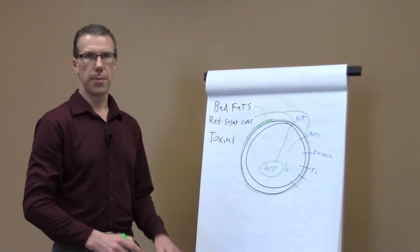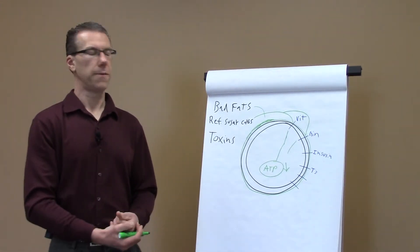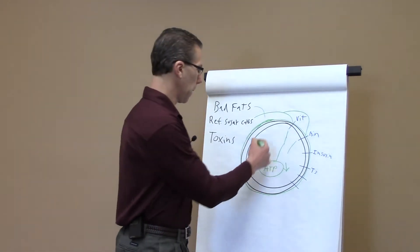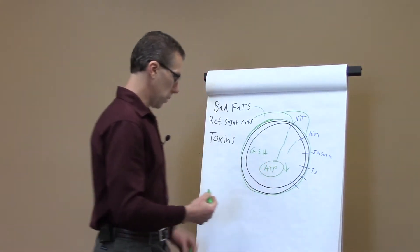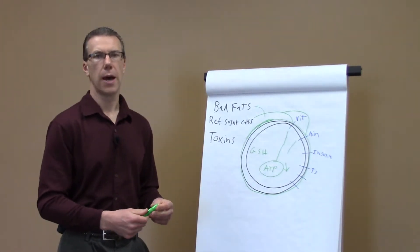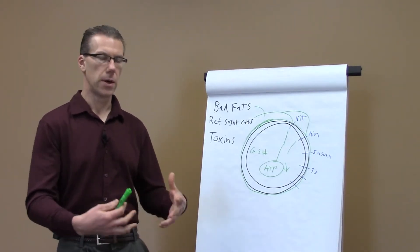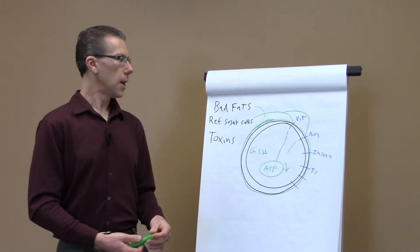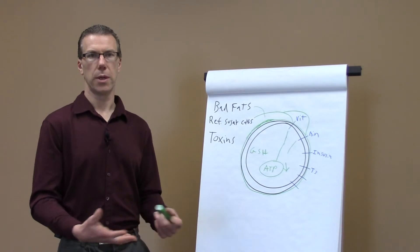The dangerous thing about that is that every cell in your body has a mechanism to protect itself, and that cell produces a substance called glutathione, GSH for abbreviation. Glutathione is basically what they call an antioxidant. Remember I said that bad fats are oxidized and they create inflammation. Well, an antioxidant helps to reduce inflammation and reduce the possibility of cell death.